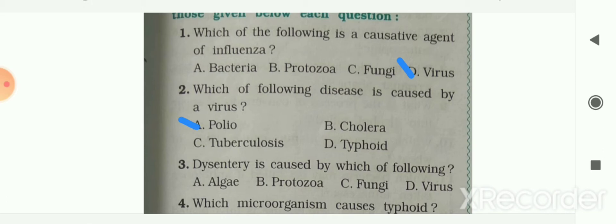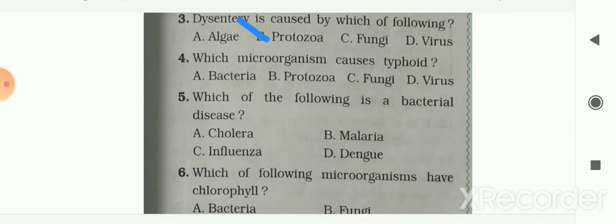Options are algae, protozoa, fungi, and virus. Your answer is B — protozoa. Dysentery is caused by protozoa.